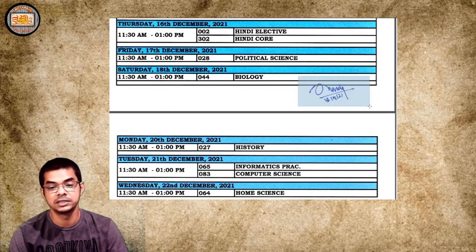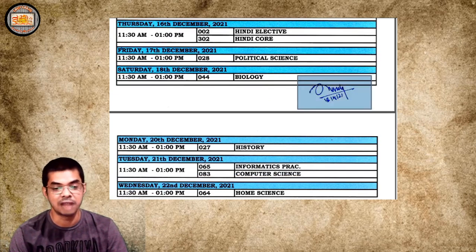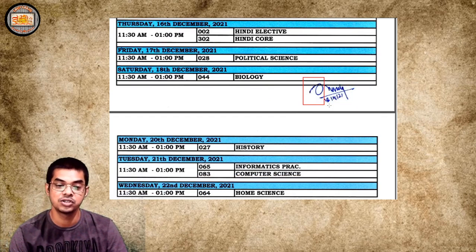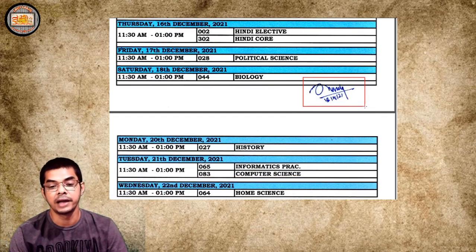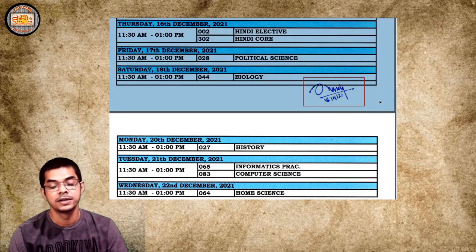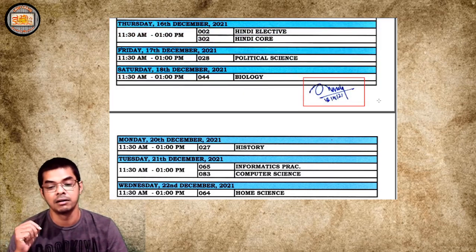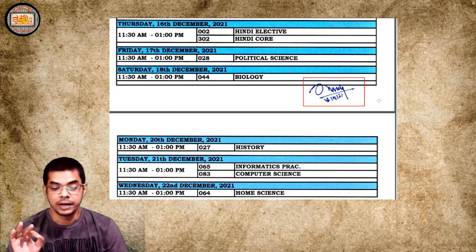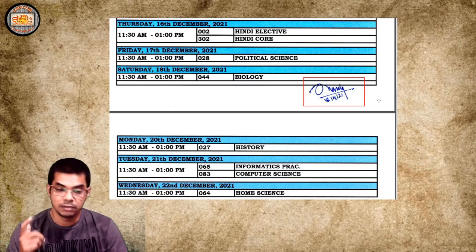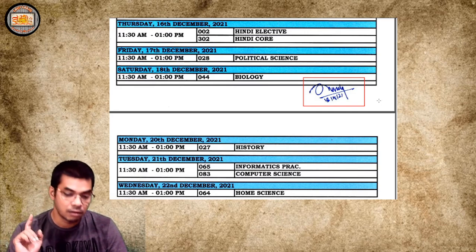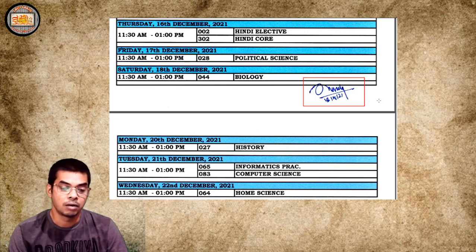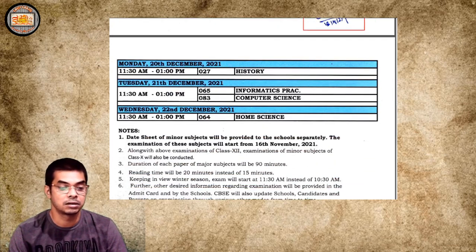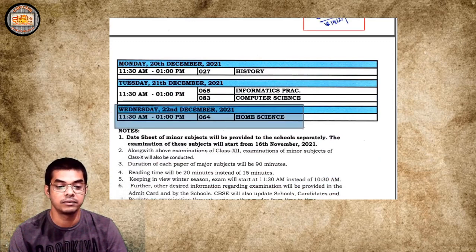As you can see, the document has only a signature and no stamp has been produced — only the signature is there. I personally have some confusion about whether it's correct or not, because it must be stamped. We'll verify the details once it's available on the official website. The exam ends on 22nd December 2021 with Home Science.